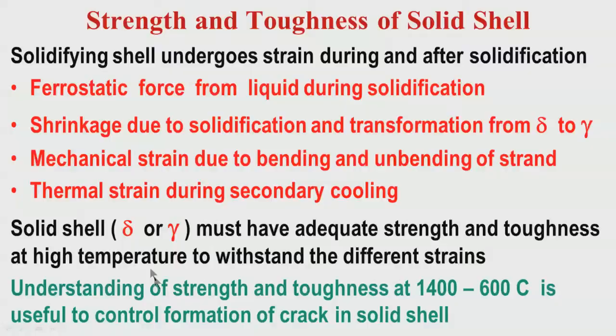In the last session I talked about the strength and toughness of the solid shell, because when solidification is taking place the strand — which is for continuous casting — is coming out of the mould, taking a different shape, and finally becoming horizontal. The shell and the strand are undergoing a lot of strain. The sources of strain include: the solidifying shell undergoes strain during and after solidification.